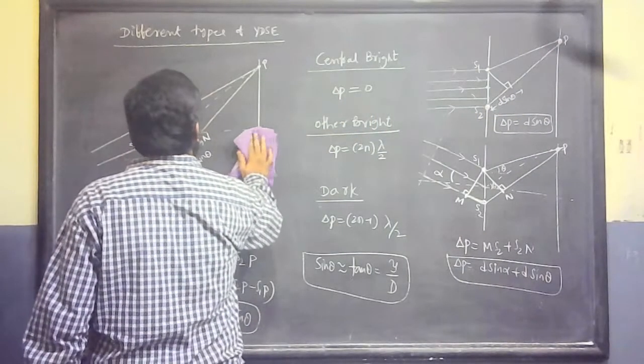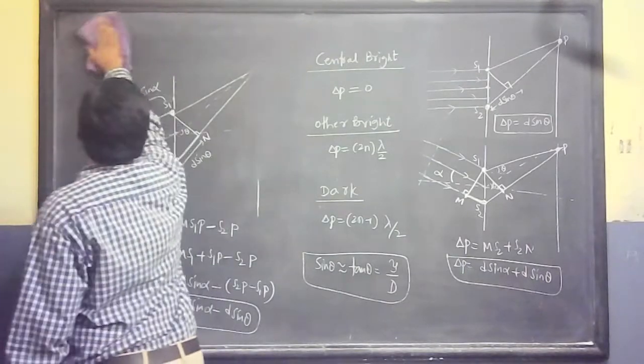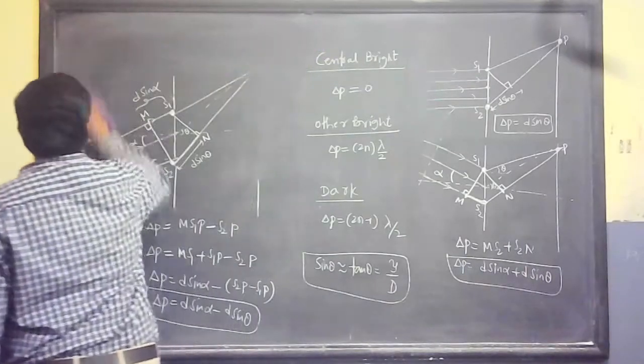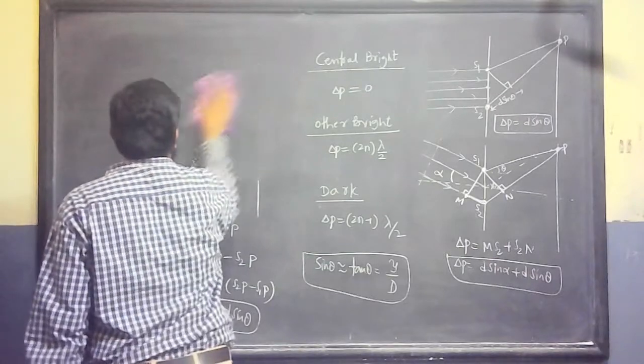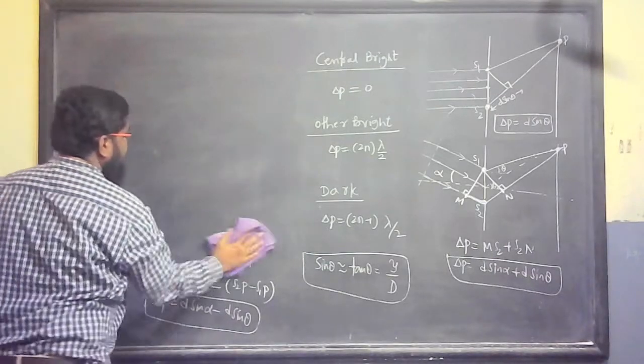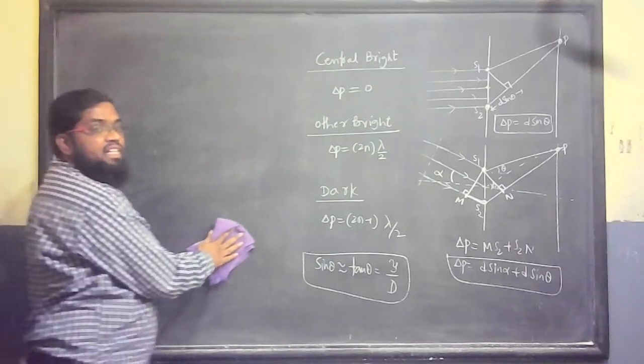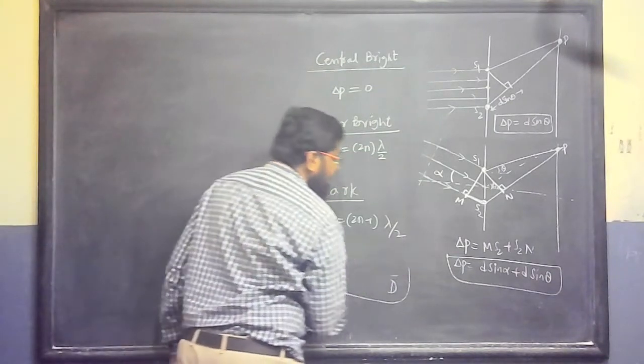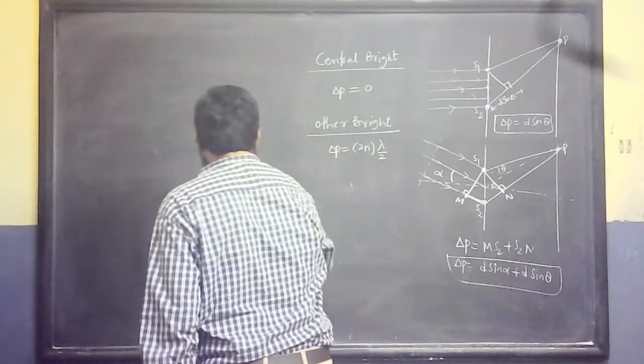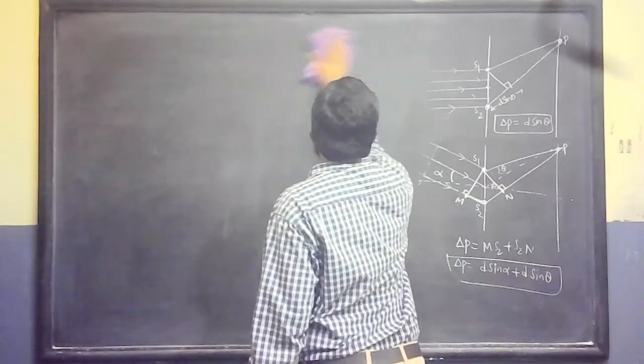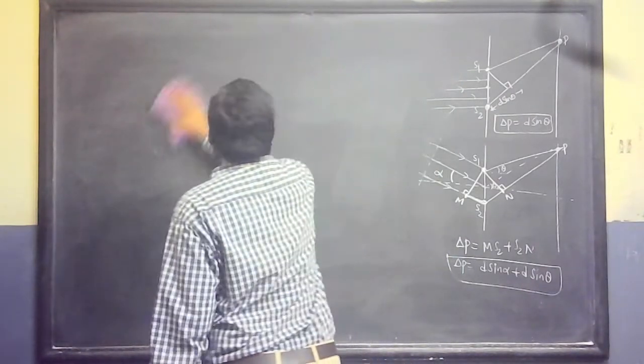So, YDSE with a slit. In the prism with minimum deviation technique we can determine the refractive index of a prism. Even there is another technique also to determine. This is one of the techniques they use to determine the refractive indexes.